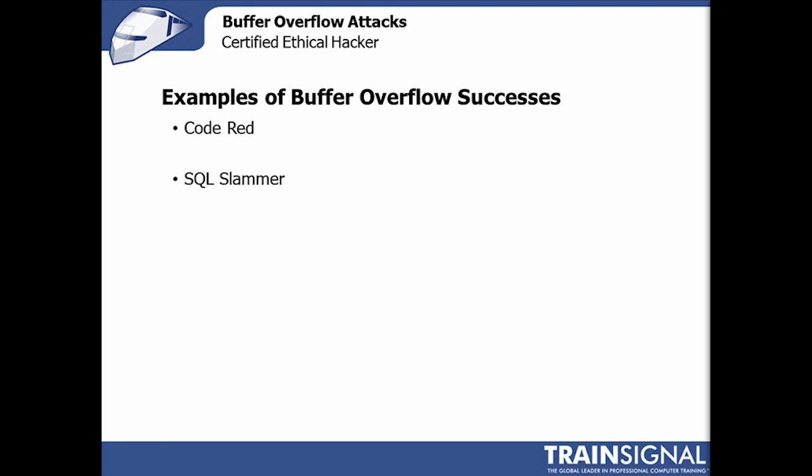The result was that the internet got really, really slow. It essentially became a giant distributed denial of service attack against an almost unpredictable number of clients, servers, and internet service providers. It was small enough to fit within a single UDP packet, and it was non-discriminatory about where it went, so it spread like wildfire. It took advantage of a buffer overflow vulnerability that had been patched — no joke — six months before SQL Slammer began nailing systems and taking them down.